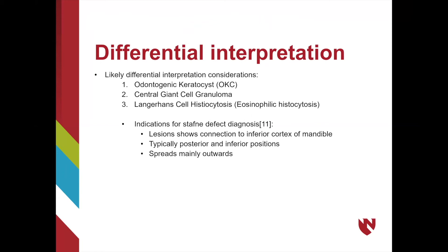Several other conditions causing radiolucent voids in the posterior mandible should be considered in the differential diagnosis for Staphne defect. Odontogenic keratocyst, abbreviated to OKC, central giant cell granuloma, and Langerhans cell histiocytosis all exhibit similar radiographic findings to Staphne defect. That being said, Staphne defect does have several indications that can lead to a diagnosis. Staphne defect lesions display a connection to the inferior border of the mandible and are typically found in the posterior mandible in the third molar region. The lingual bone depression will tend to be below the inferior alveolar canal. Though the vast majority of Staphne defects are unilocular, it may be spread outward from the initial lesion.